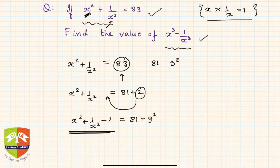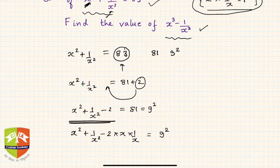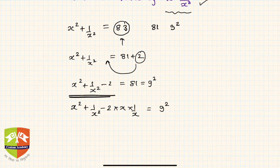Now if you see closely, this is an algebraic identity. It is x² + 1/x² - 2 times x times 1/x. See, x × 1/x was 1, and 2 can be expressed like this, which helps us in completing the square.